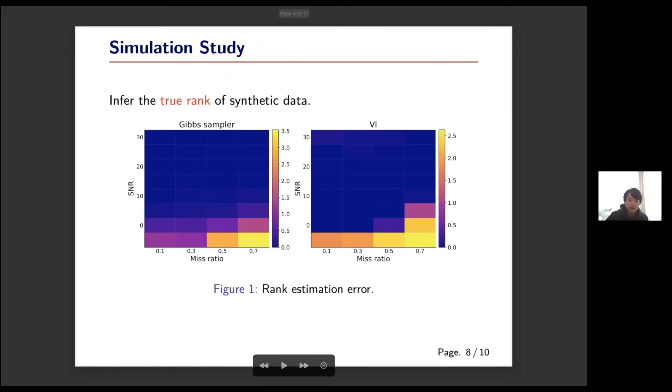Now let me introduce some experimental results. First, for the simulation study we try to use our model to infer the underlying true rank of the synthetic data. From this figure we can see that our model is able to infer the underlying true rank correctly in most cases, especially when the missing ratio is small and when the signal to noise ratio is large.